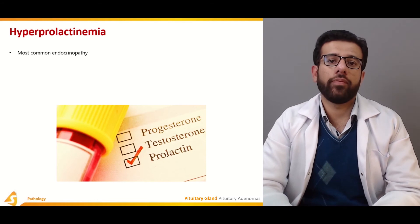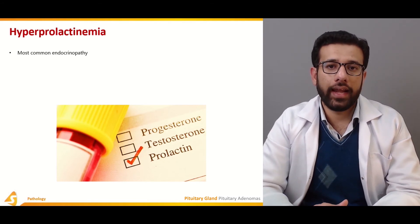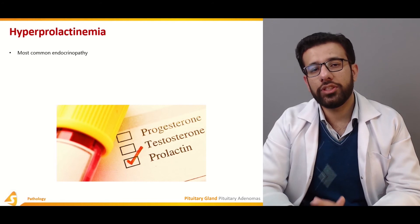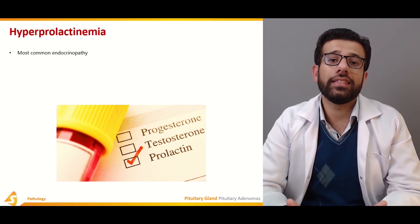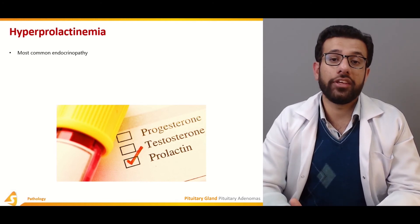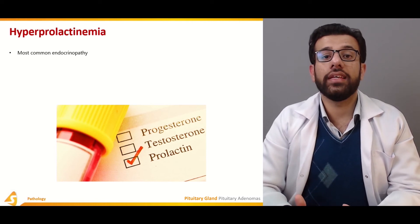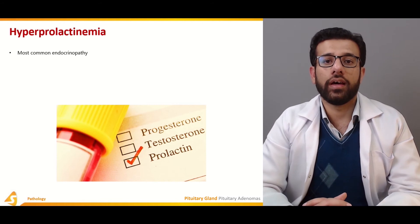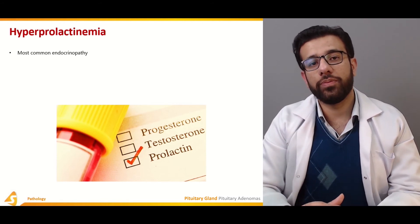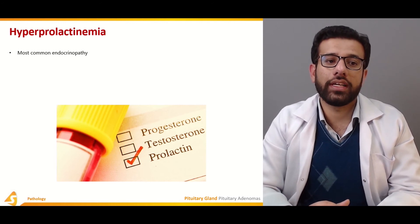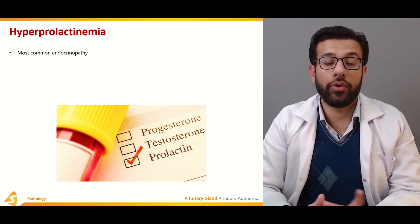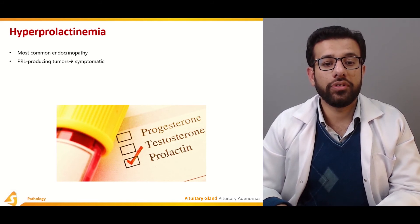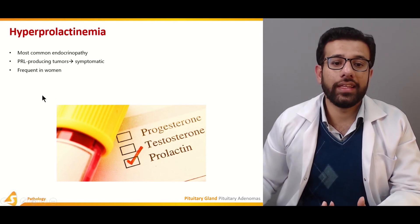Hyperprolactinemia is the most common type of pituitary adenoma, resulting from increased prolactin concentration. Certain physiological conditions cause increased prolactin release, including pregnancy, lactation, stress, and the suckling reflex. The most important pathological condition is prolactinoma, in which prolactin is increased from tumor cells. Prolactin-producing tumors are symptomatic and most commonly occur in women.